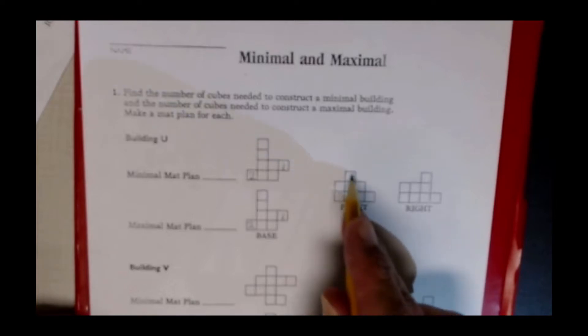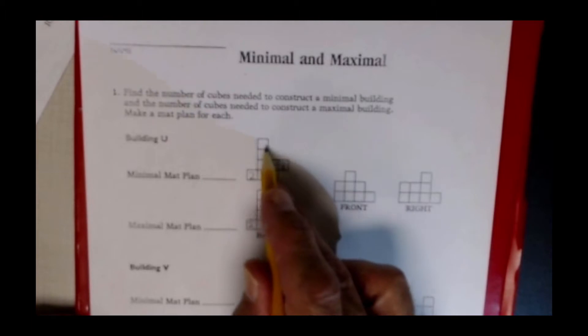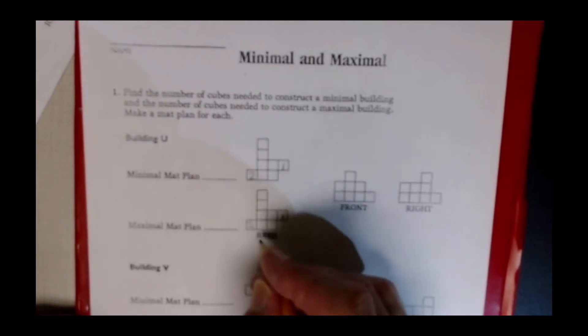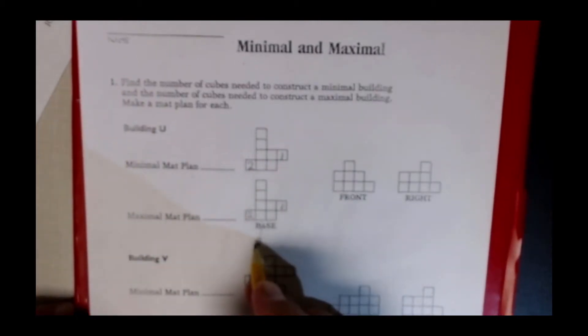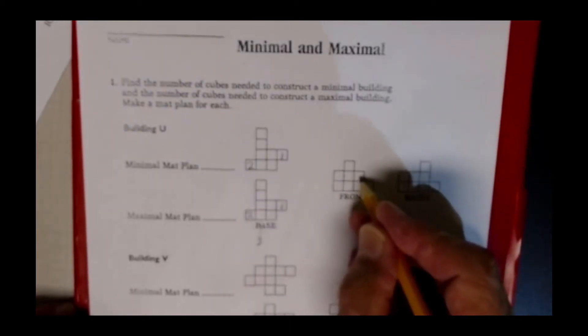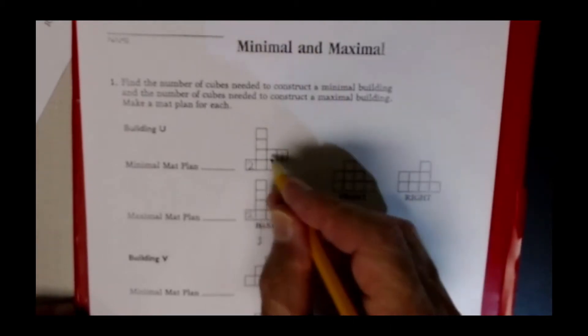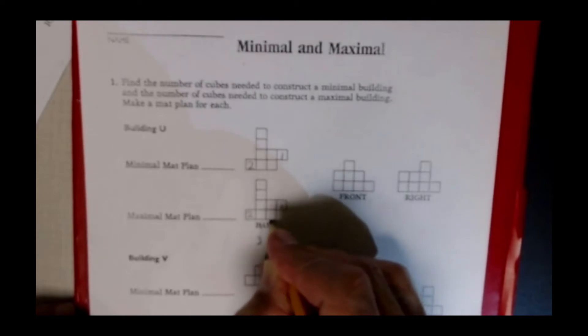So somewhere in this column I need to have a 3 so I'm going to indicate that here with a 3, there needs to be a 3 here as a maximal value. In a similar manner in this column I have to have a 2 so there needs to be a 2 somewhere in this column.